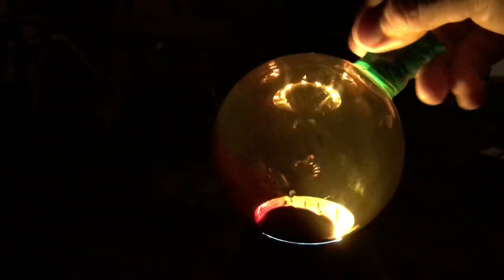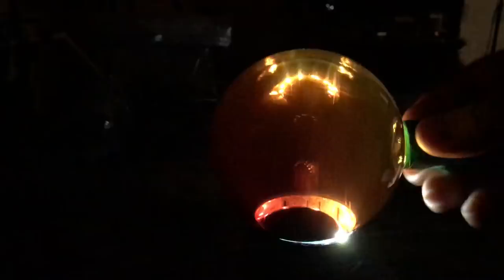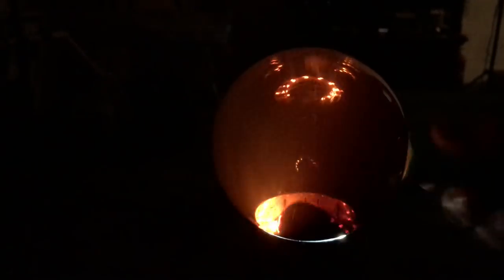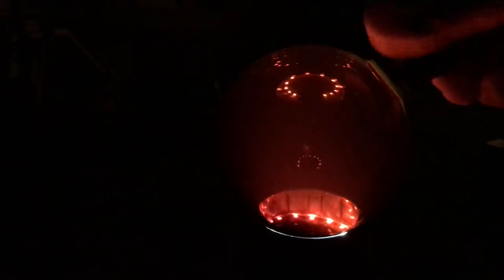And there's some ferrofluid along with some dissolution agent in here. And what I do is I just spin the globe to coat the inside of it, which of course it'll eventually pour down to the bottom.